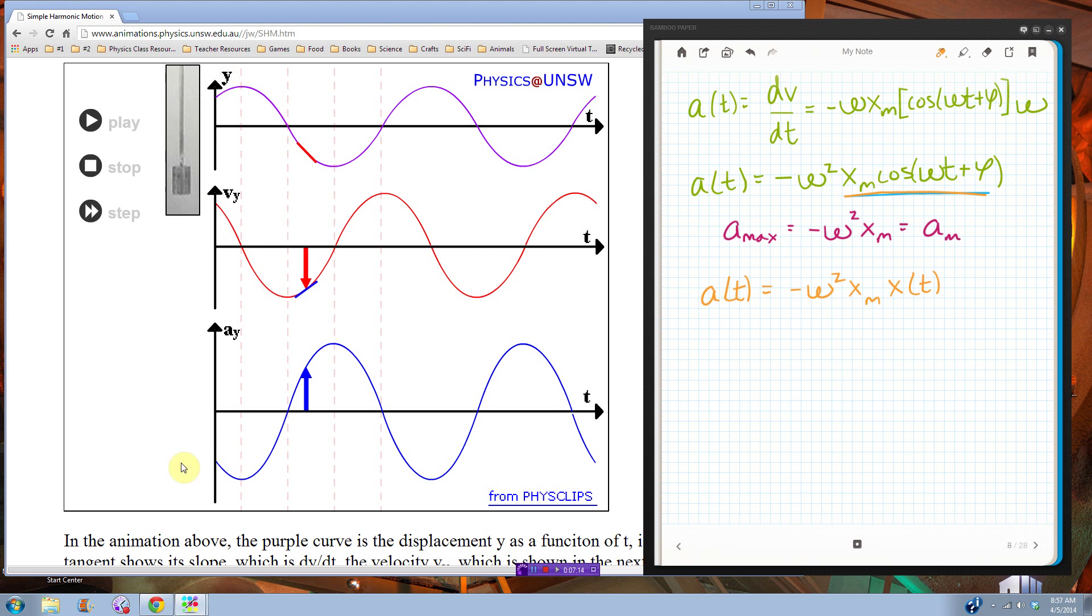If you look at the position graph and the acceleration graph, they have all of their maximums at the same time, but they're opposite signs. So like right here, the position is zero, so is acceleration. But right here, the position is its maximum magnitude, but negative, and the acceleration is maximum magnitude, but positive. So they're kind of like opposites of each other, but notice the amplitude's not the same either.